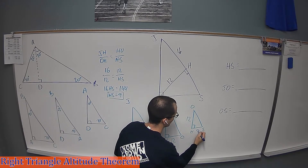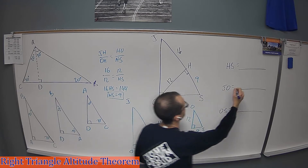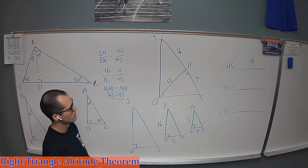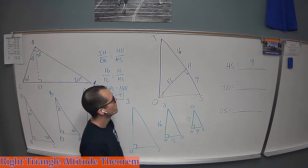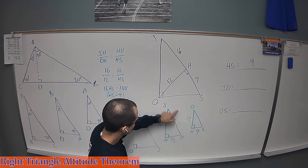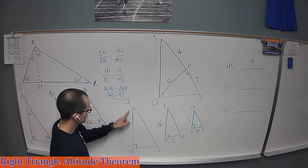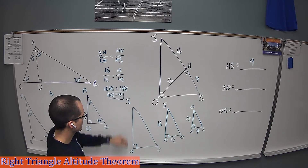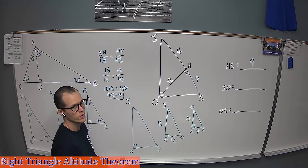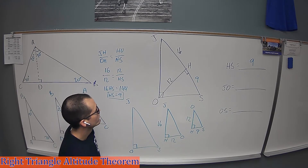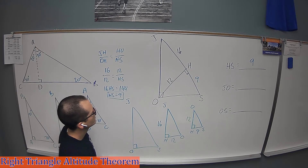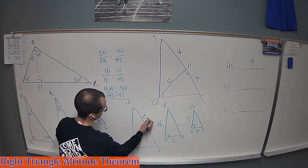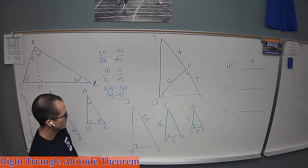I'll record HS = 9 on all three triangles. Now let's find JO, which is the hypotenuse of the medium triangle and the long leg of the larger triangle. We also know that JS = JH + HS = 16 + 9 = 25, so we do have that value, but we still don't have enough information to use ratios directly for JO.